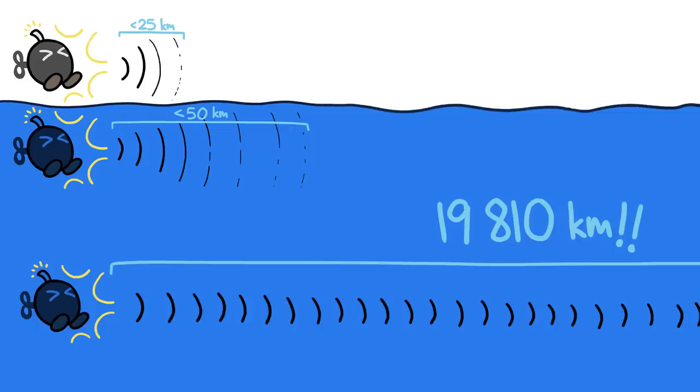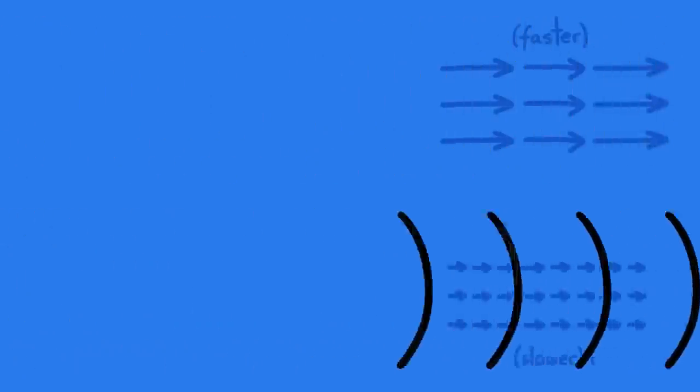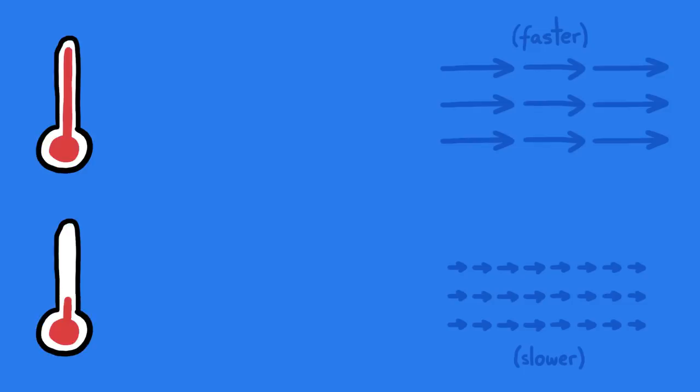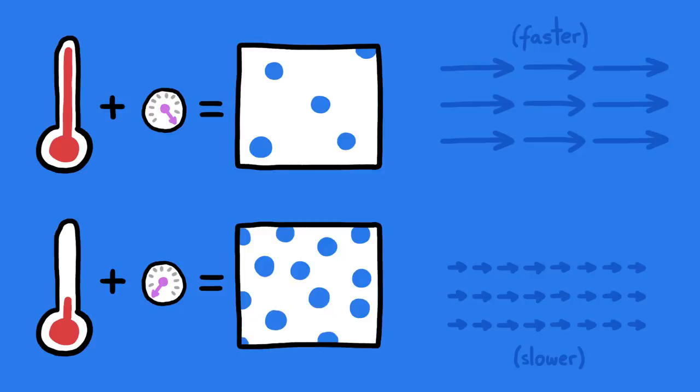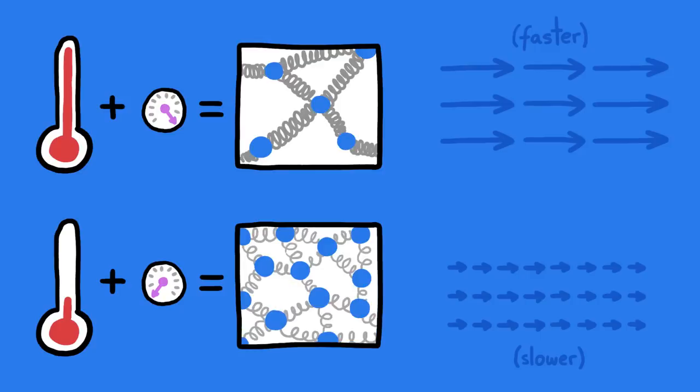These sounds traveled halfway around the world thanks to an underwater sound superhighway. That superhighway exists because sound travels at different speeds in different layers of the ocean. The temperature of water, and to a lesser extent its pressure, affect how densely packed its molecules are, and how rigidly they're connected to each other, the two factors which determine the speed of sound.